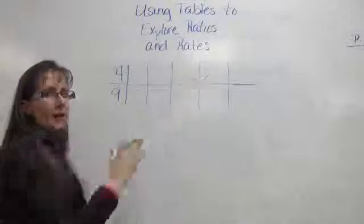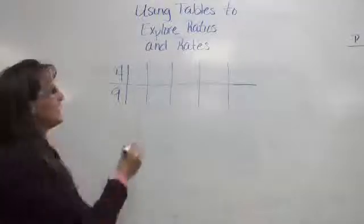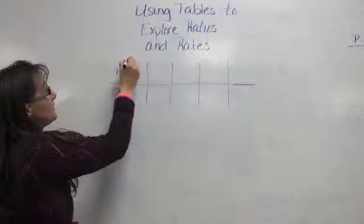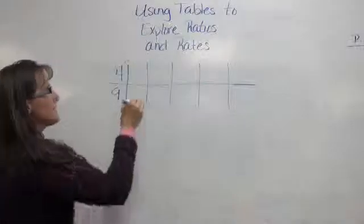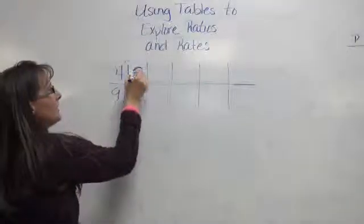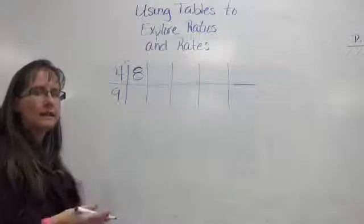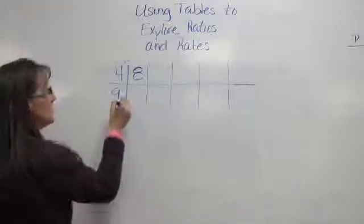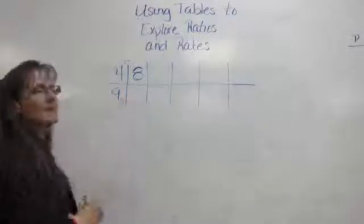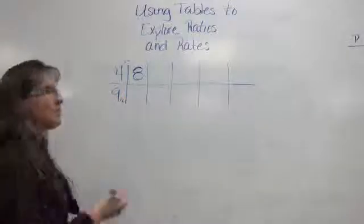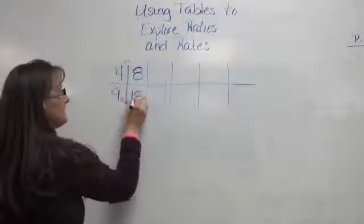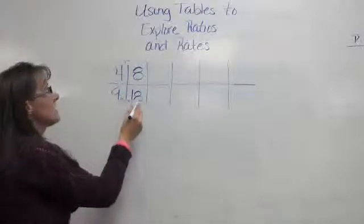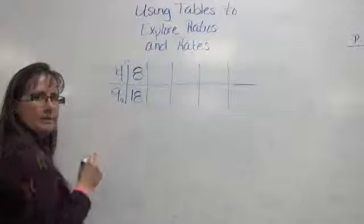I'm going to make mine larger. I'm going to take the 4 and multiply it by 2, and that's going to give me my next numerator of 8. Remember, whatever you do to the numerator, you also must do to the denominator. So I'm going to take 9 times 2 and get 18. 8 eighteenths is the same thing as 4 ninths.